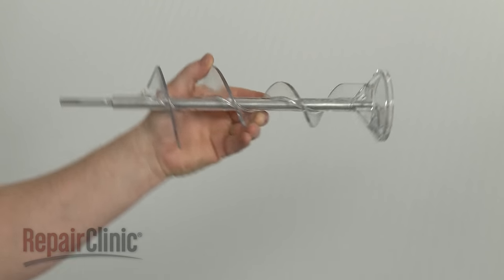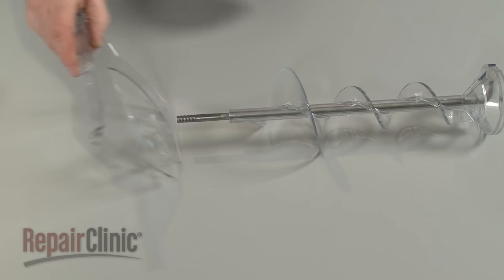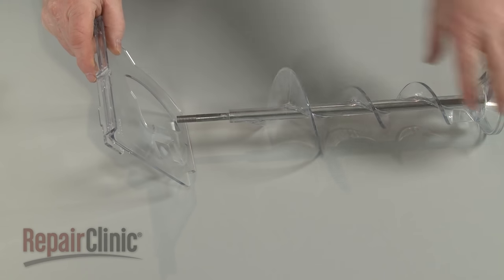You're now ready to install the new ice bucket auger. With the cover plate's raised edge facing the rear of the auger, slide the plate on first.